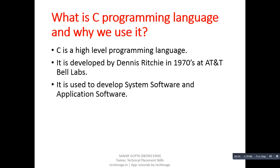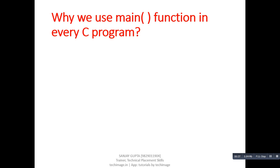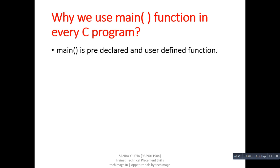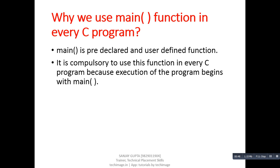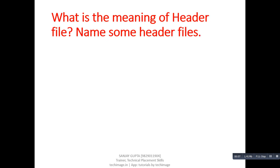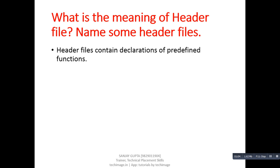C is used to develop system software and application software. Next question: why we use the main function in every C program? Answer: main is a pre-declared and user-defined function. It is compulsory to use this function in every C program because execution of the program begins with main.